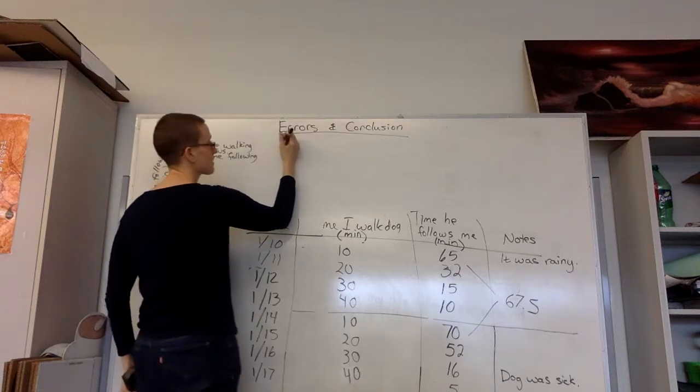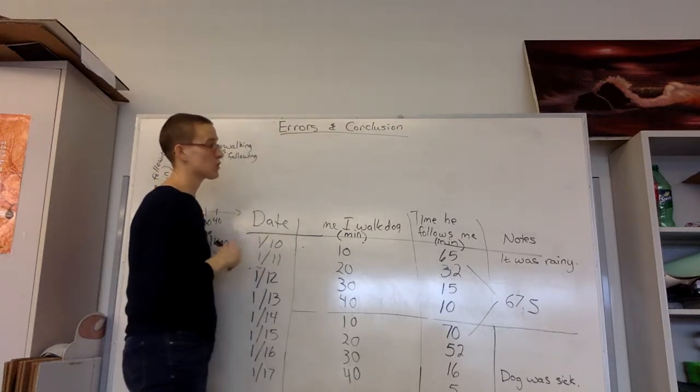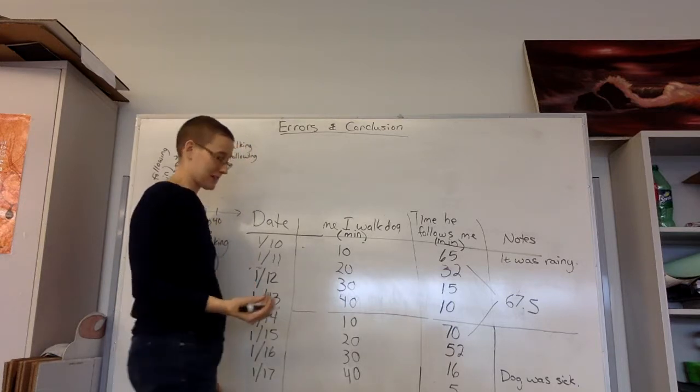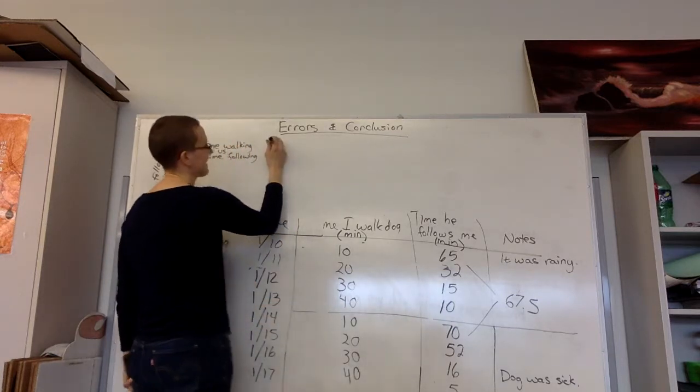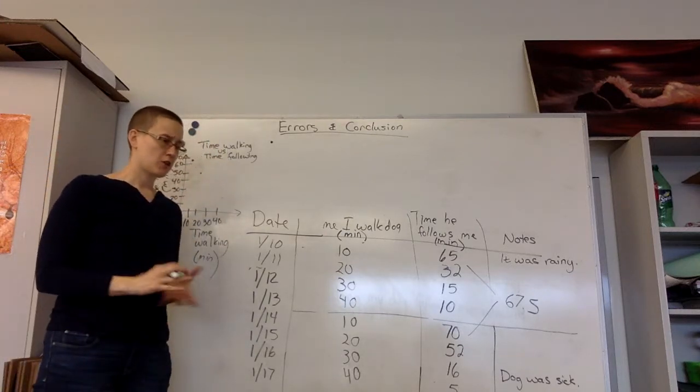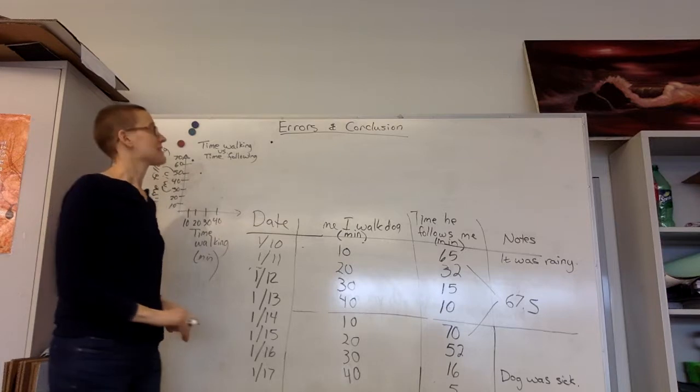So errors, when we do an error analysis, what we're doing is we're looking at the experiment and seeing what we would do different the next time. And again, every experiment's a little different. So you think about what went well in your experiment and what you'd like to do better the next time.